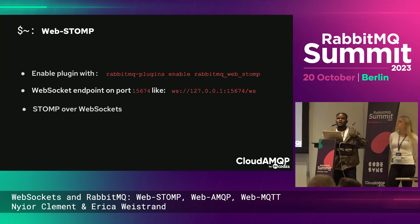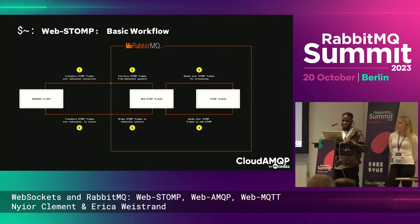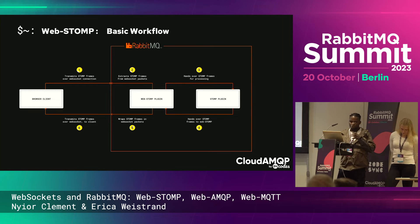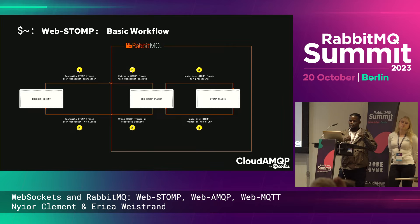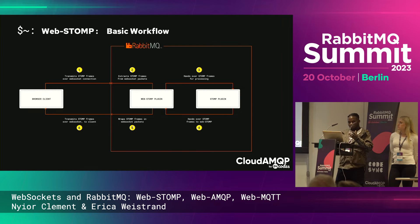The WebSocket endpoint can accept STOMP frames wrapped in WebSocket packets. When RabbitMQ receives these, the WebSTOMP plugin unpacks the STOMP frames from the WebSocket packets, then hands them to the STOMP plugin for processing. If the server needs to send a response back to the client, the reverse happens: STOMP frames are handed to the WebSTOMP plugin, which wraps them in WebSocket packets and forwards them to the browser client.